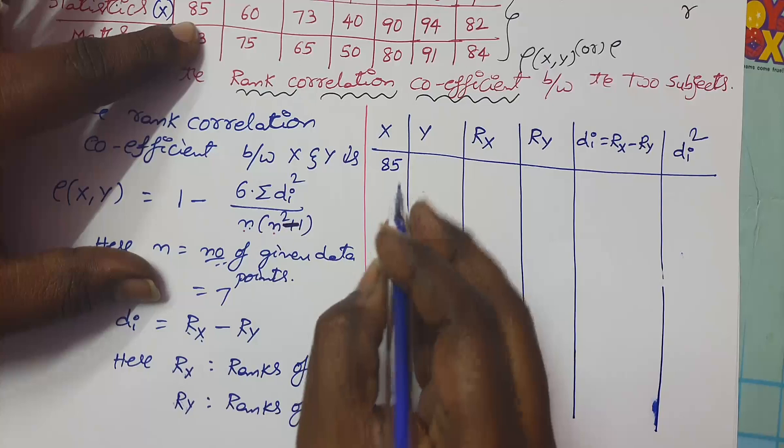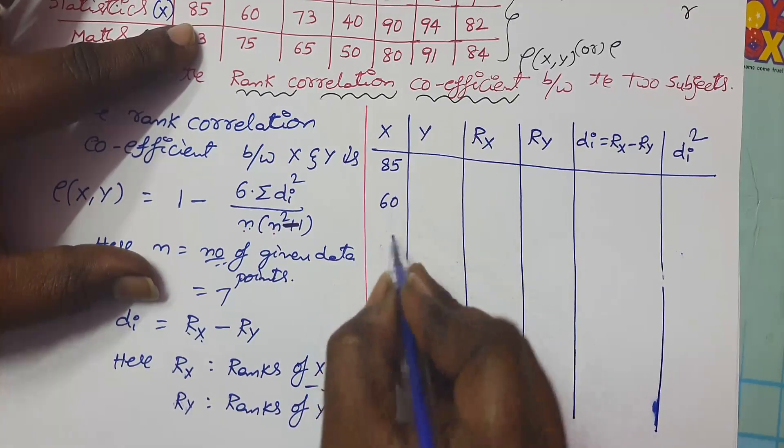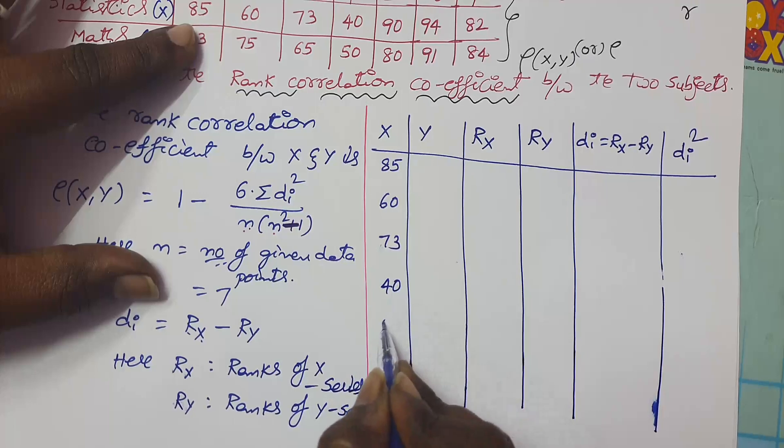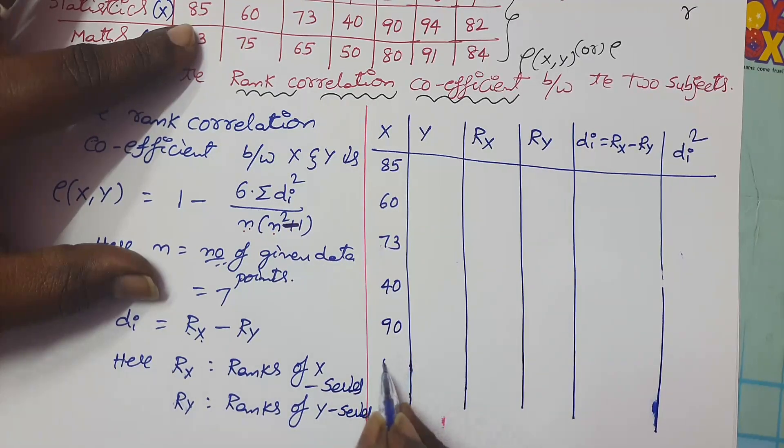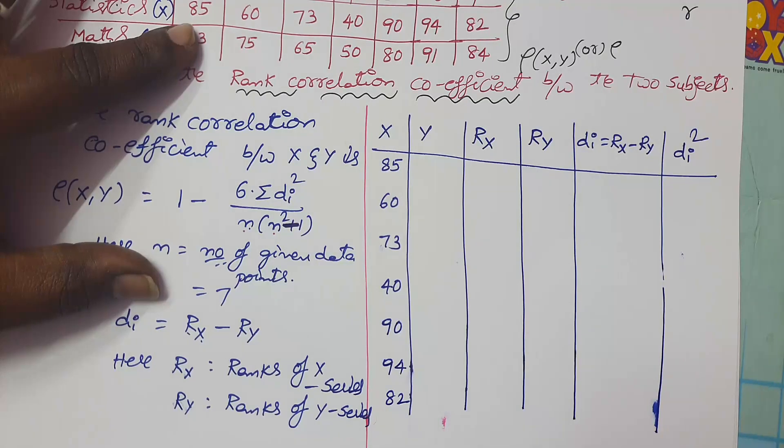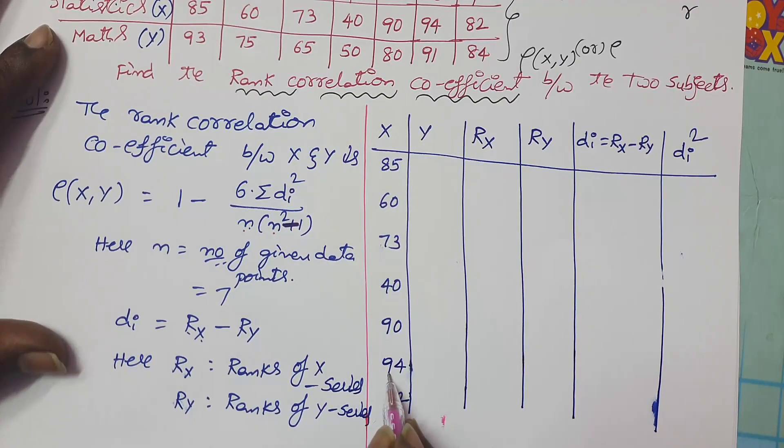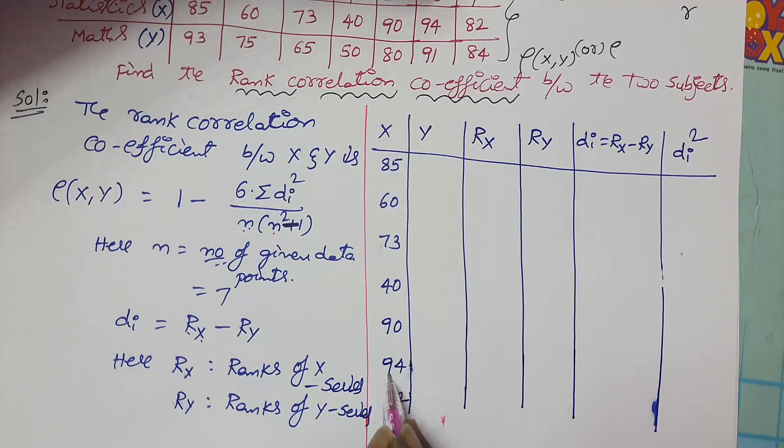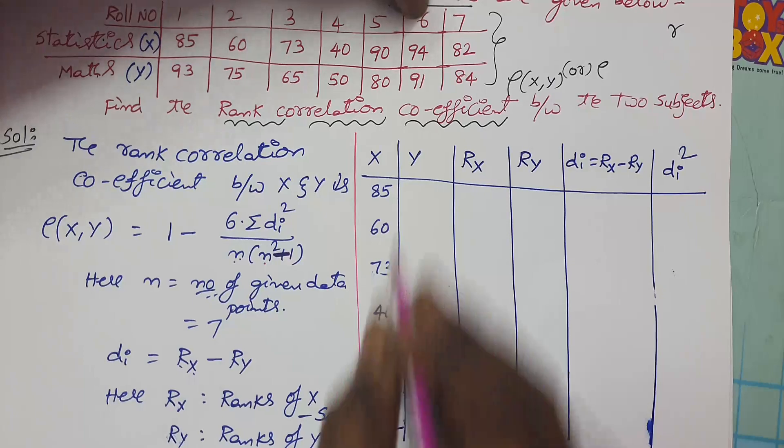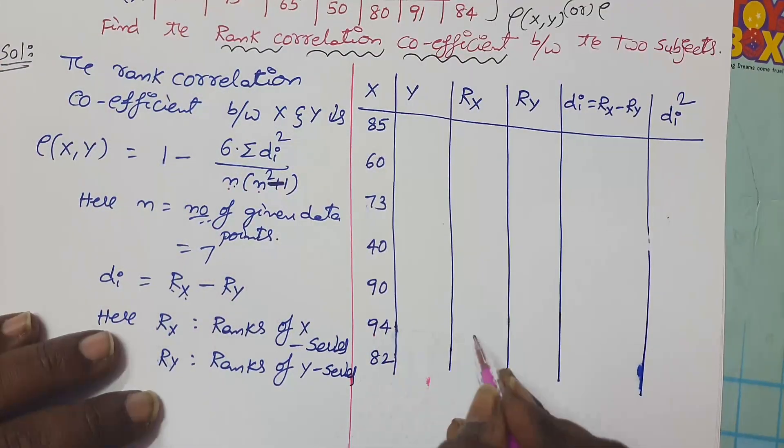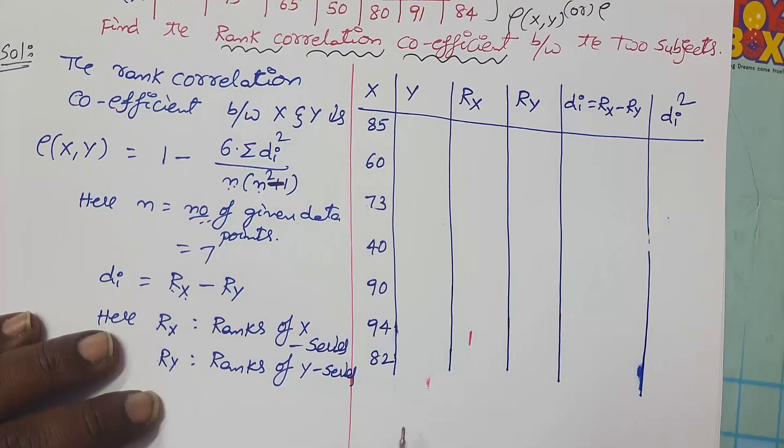85, 60, 73, 40, 90, 94, 82. Among these all 7 student marks, we are observing that 94 is the highest mark. It means that roll number 6 got the highest mark in statistics, so he got first rank.